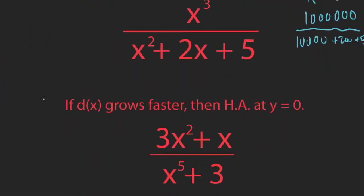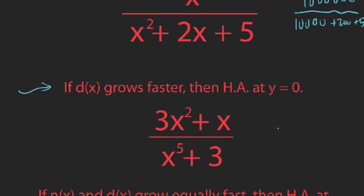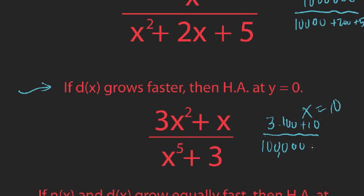On the other hand, if d(x) grows faster, you'll always have a horizontal asymptote at y equals 0. Here's an example where the denominator has a degree 5 polynomial and the numerator is only degree 2. At x equals 10, the numerator gives around 310, but the denominator is 10 to the fifth — that's 100,000. The numerator is totally eclipsed by the denominator, so you end up with some number divided by an extremely large number, which approaches y equals 0.